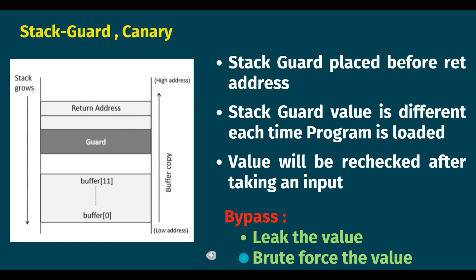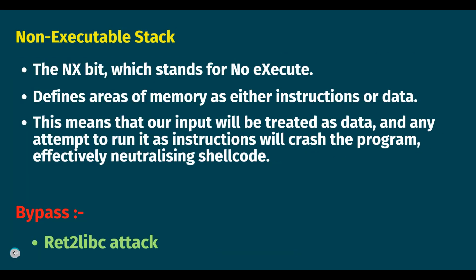We have discussed how canary protection works. Now let's discuss how we can bypass it. The technique is similar to bypassing PIE protection. The first way is to leak the value — since the guard value is also pushed onto the stack, we can use a format string vulnerability to leak the stack contents and reuse the guard value in our payload. This ensures the guard value is overwritten with the same value, and then we overwrite the return address with a useful address. The compiler will then see the guard value as unchanged and redirect control flow as we want. The second way is the brute-force approach — we assume a random possible canary value and run the program multiple times until we get a hit. This brute-force technique is feasible in 32-bit programs but not in 64-bit programs.